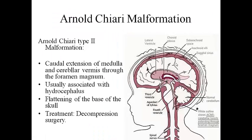The last anomaly is Arnold-Chiari malformation — a caudal extension of the medulla and the cerebellar vermis through the foramen magnum. Arnold-Chiari can be of two types. Type 1 is usually not of much clinical significance as it is mostly asymptomatic. In Type 2, there is obstruction of CSF flow leading to hydrocephalus, and it may occur in association with myelomeningocele. Another associated condition is syringomyelia, a degenerative disease of the spinal cord. Treatment of Arnold-Chiari Type 2 is usually by decompression surgery.